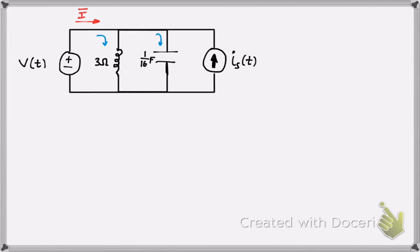I redrew the circuit here. We're given Is of t here. When we deal with circuits, we need to express the sinusoidal alternating current as a cosine. The relationship between sine and cosine is just a phase shift of 90 degrees, so we subtract 90 degrees from sine to get the cosine version.